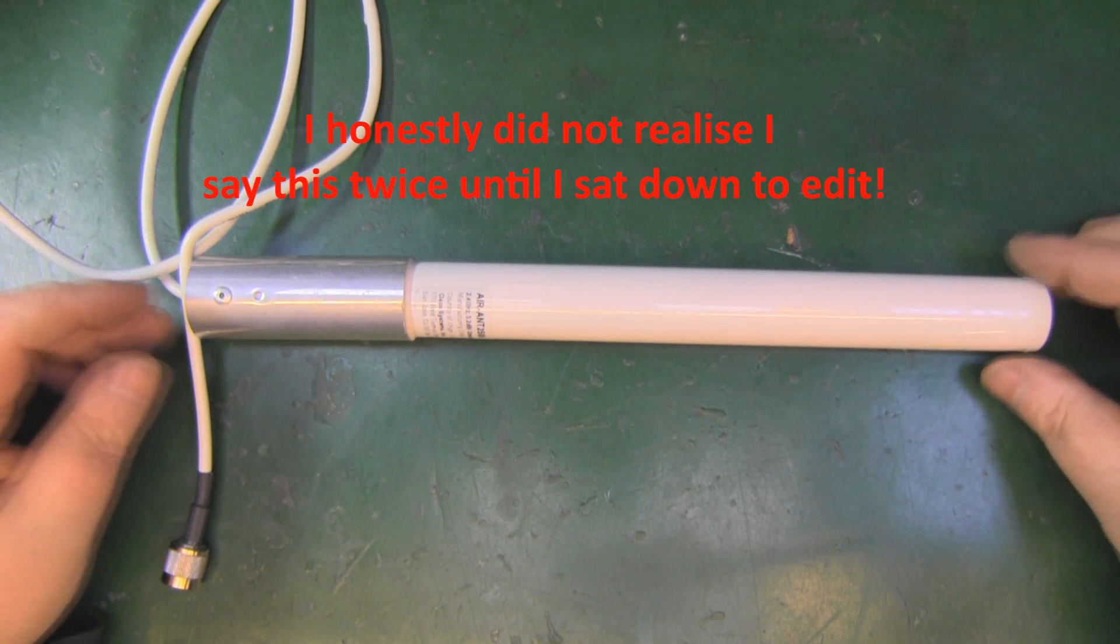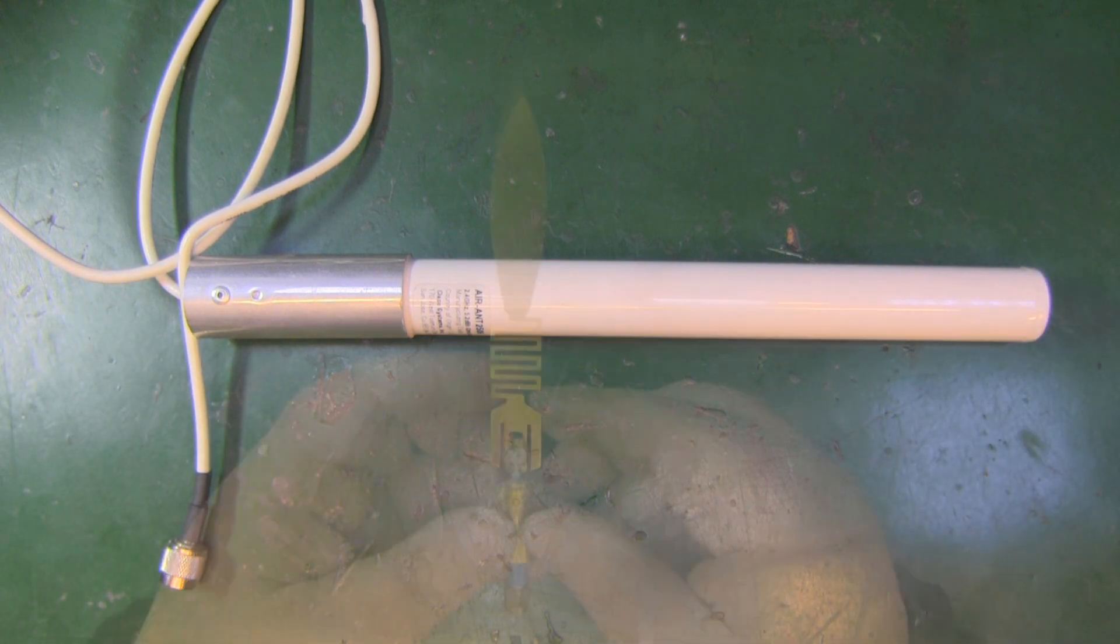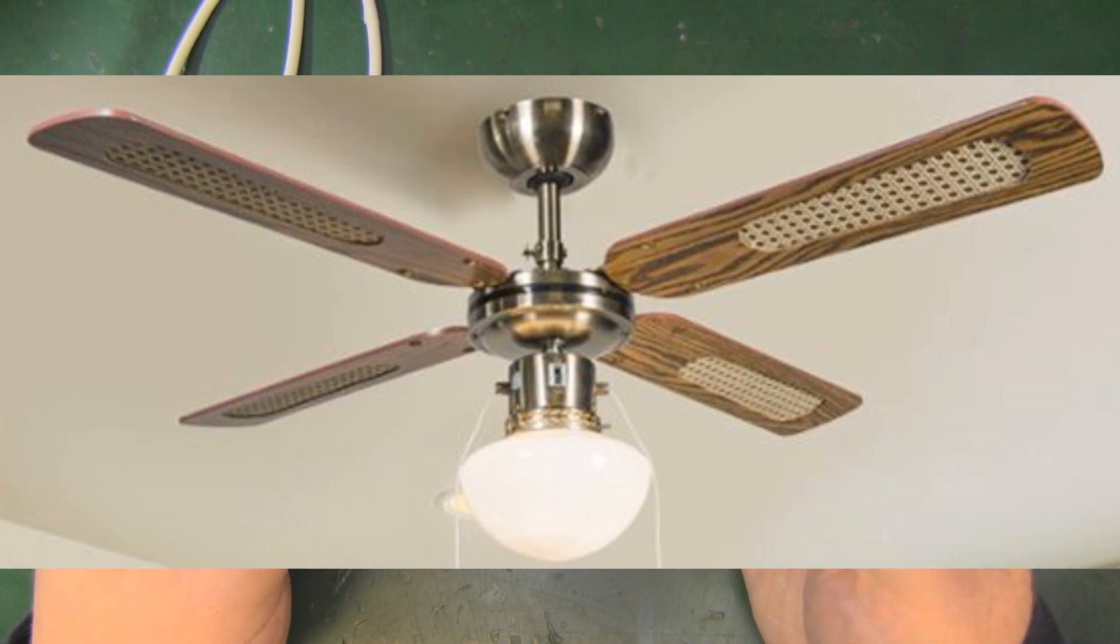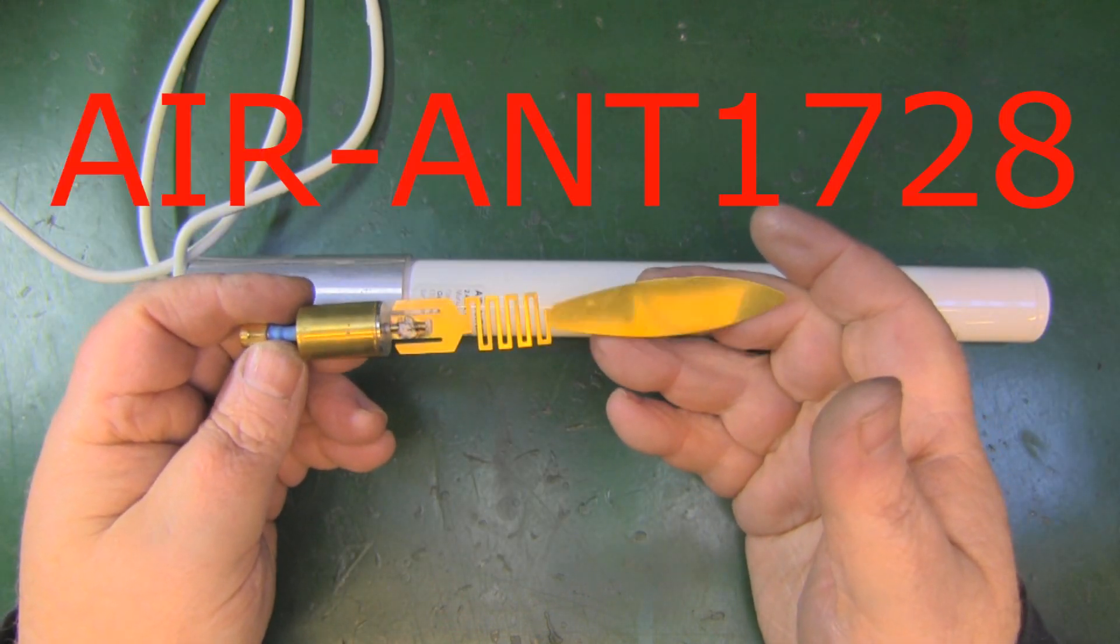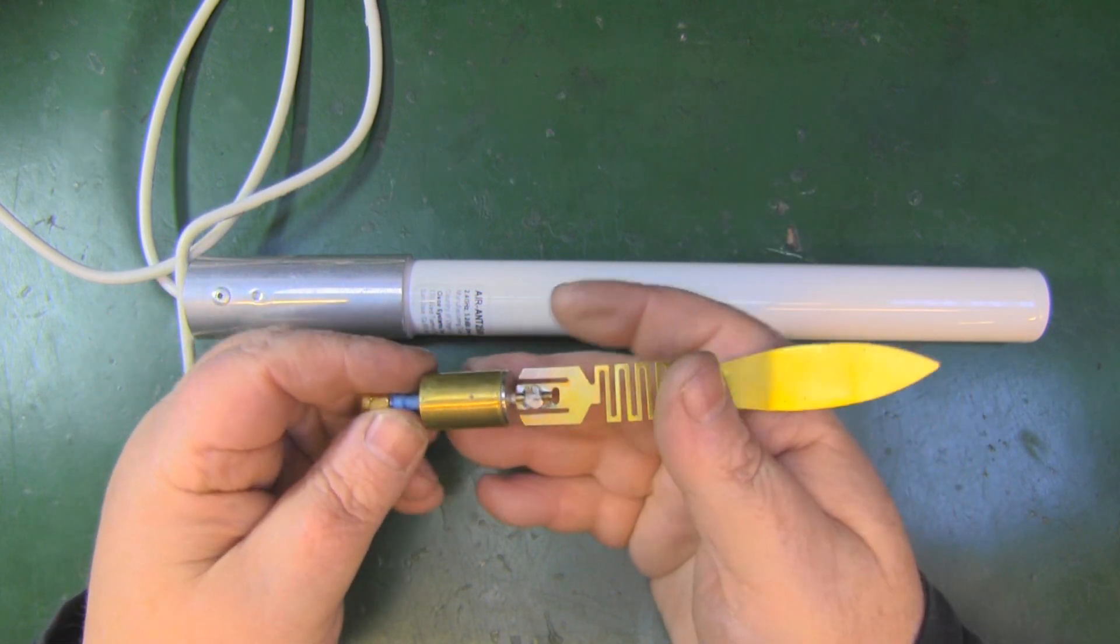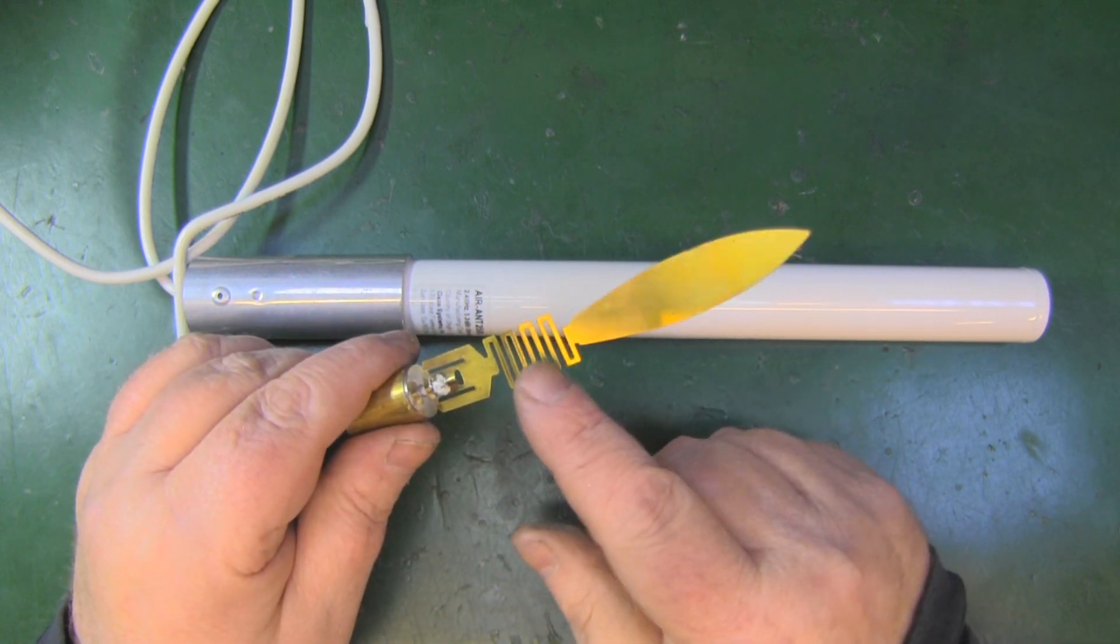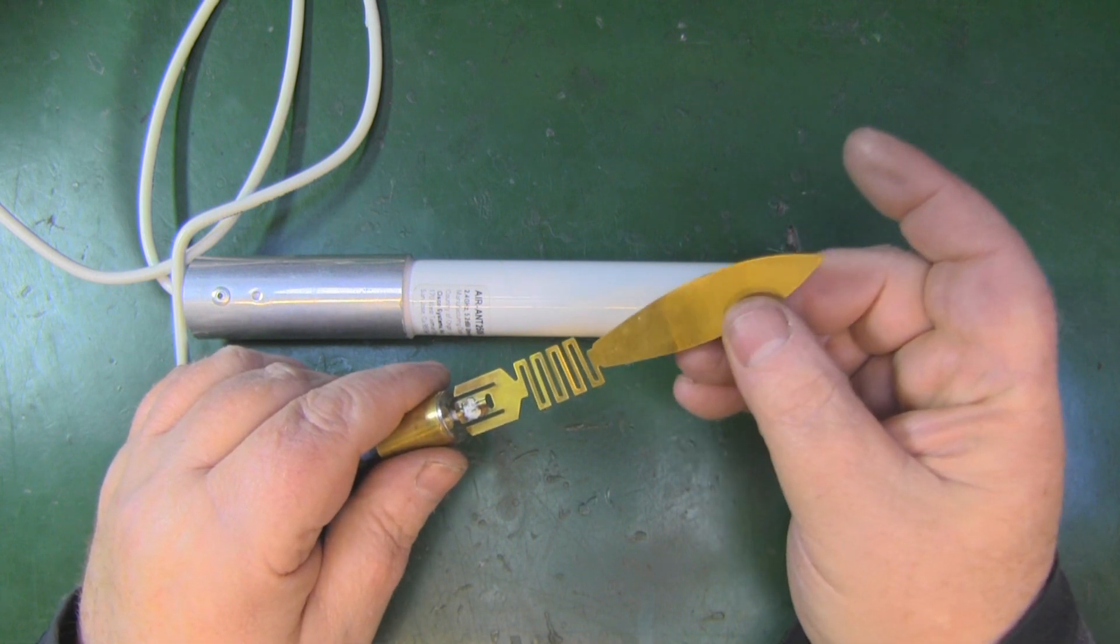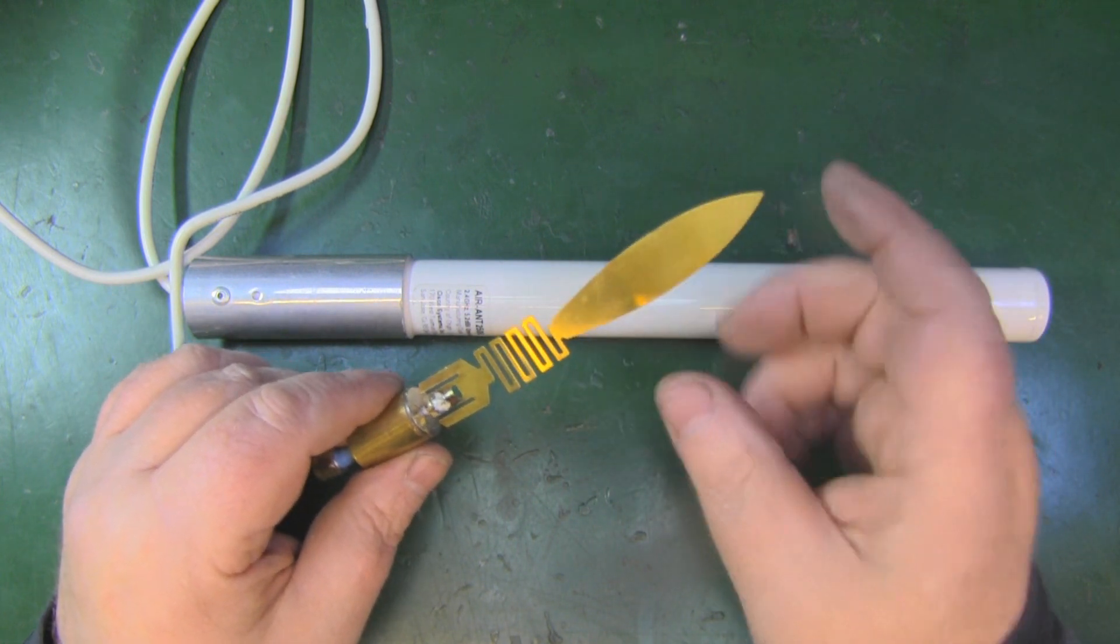Basically it's a Hertzian dipole, the 5dB version. We've got a quarter wavelength here, quarter wavelength here, a loading coil as a separator, and then I think it's a half wavelength or maybe just a little bit more. It's unusual because it's got this shape here, and that was to do with beamforming.